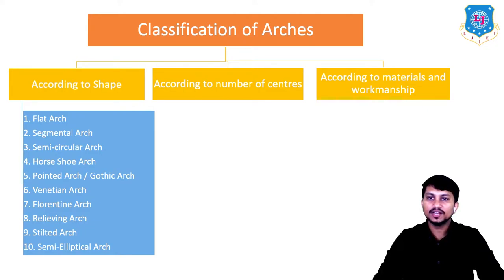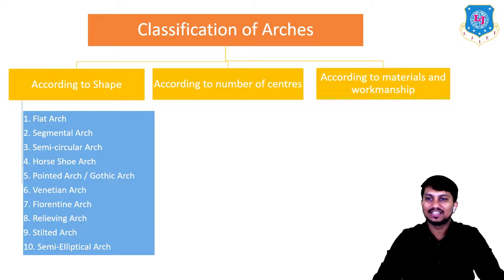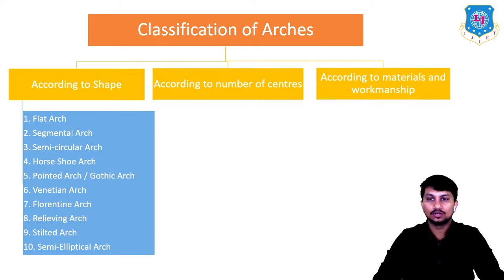According to shape, there are mainly ten types of arches shown in this slide: flat arch, segmental arch, semicircular arch, horseshoe arch, pointed arch (also called gothic arch).